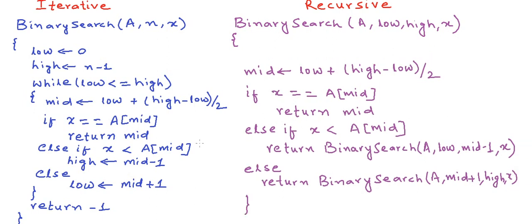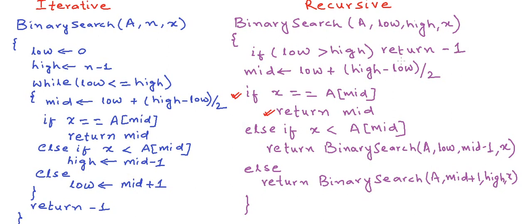When we write recursion, we should always look for a base case — a base condition where we stop the recursion. In this case, we stop if we find the element, so that condition returns and exits without any further recursive call. But what if we do not find x in the array? We have another base condition: if low is greater than high, we do not have a valid segment in the array. We have exhausted our search space, so we return minus one to say that x does not exist. These two are our base conditions that cause the recursion to stop, and the condition low greater than high is the same condition we check in the iterative loop.